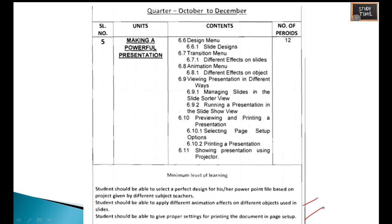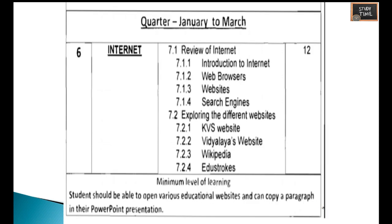The sixth chapter covers the internet, including an introduction to web browsers, websites, and search engines, and exploring different websites like the KVS website, the alias website, Wikipedia, and EduStroke. The minimum level of learning is that students should be able to open various educational websites and copy a paragraph into their PowerPoint presentation.